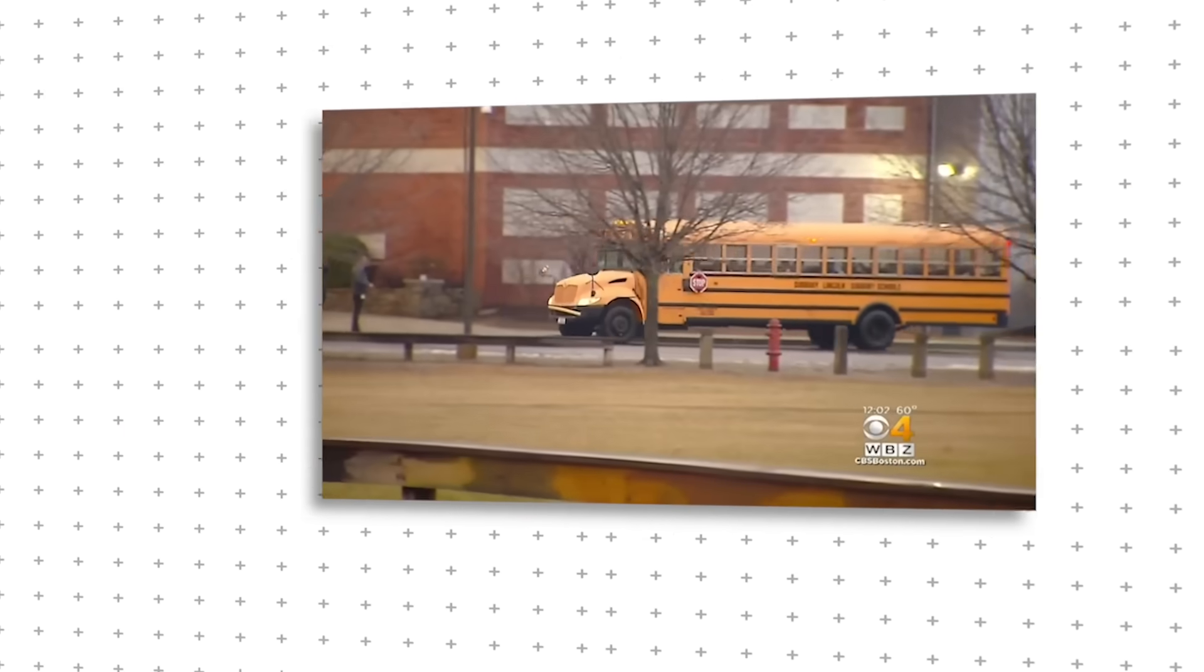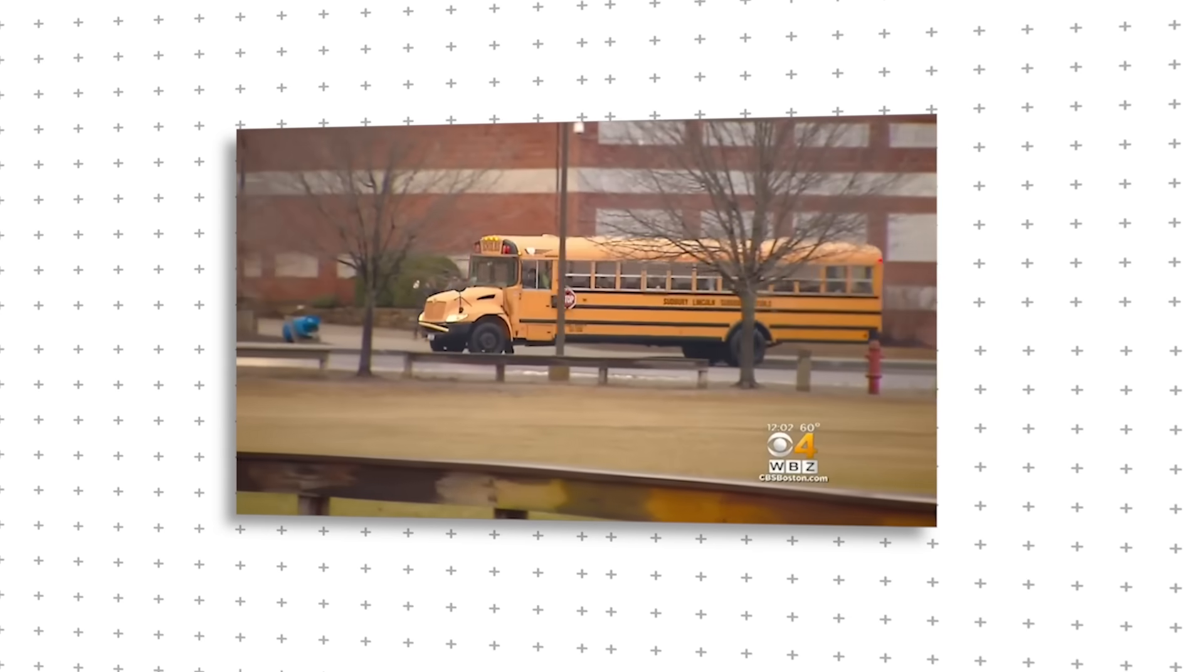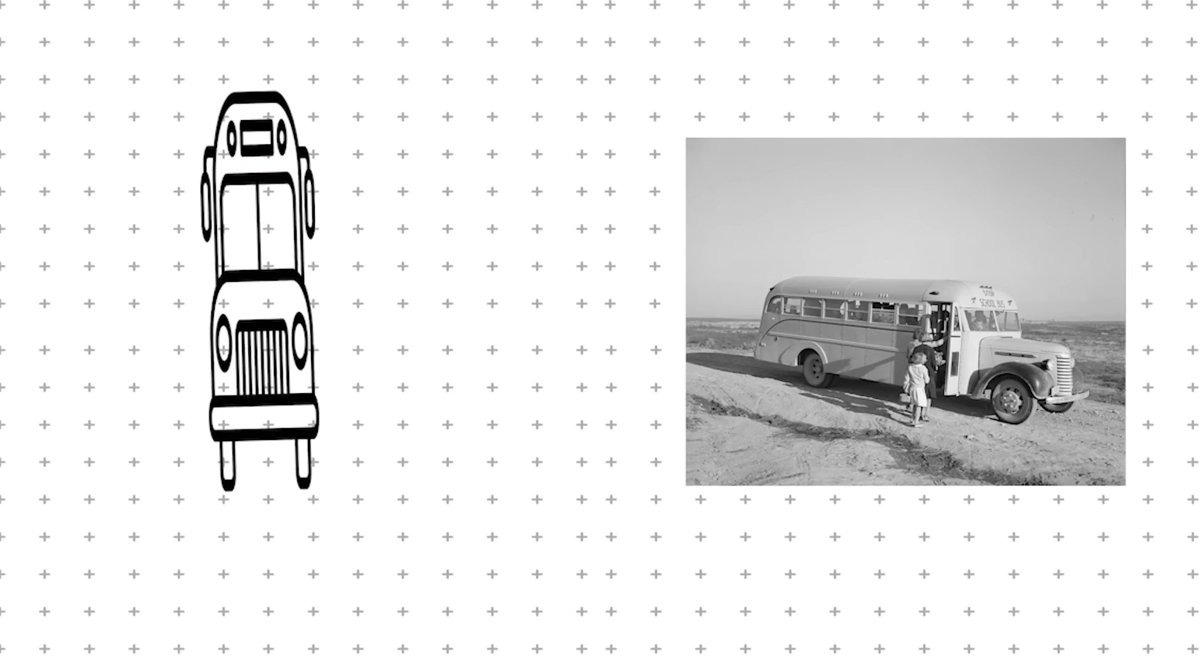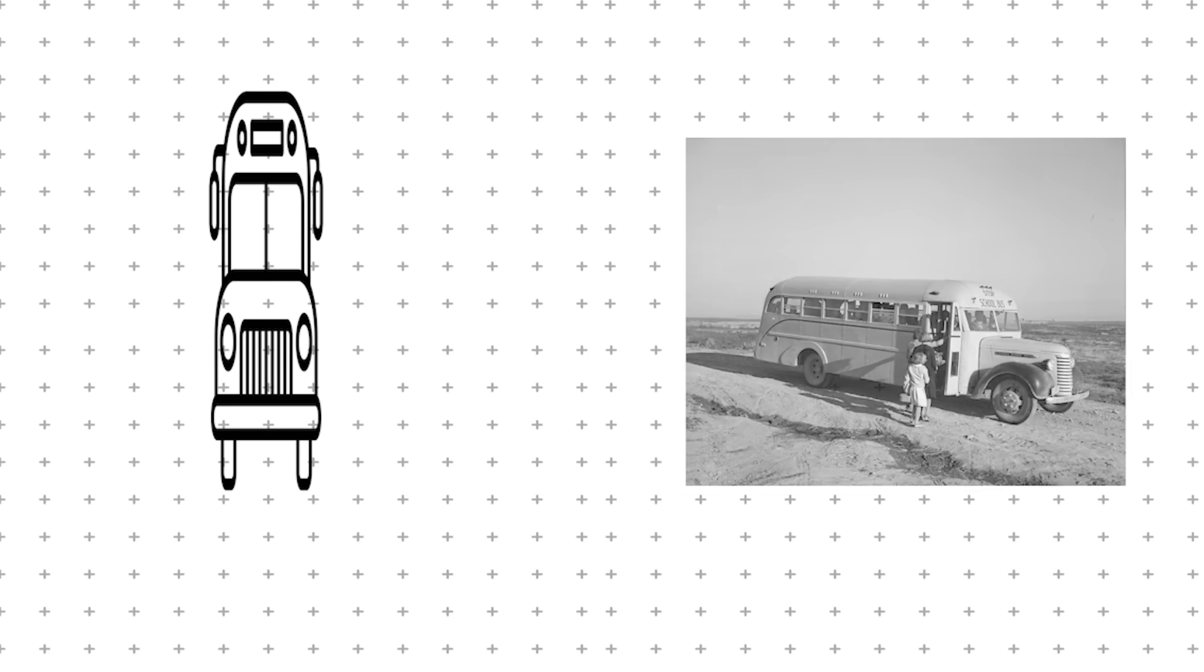Rollover protection wasn't just about making buses stronger. It was also about preventing them from tipping over in the first place. Early school buses had narrow wheelbases and high centers of gravity, making them dangerously unstable. Engineers fixed this by widening the base, lowering the center of gravity, and adjusting the suspension, turning an accident-prone design into a far more balanced and secure vehicle.